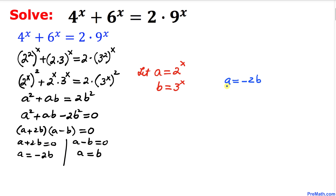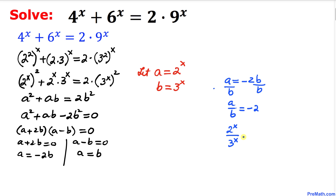For the first equation, dividing both sides by b gives a/b = -2. Since a = 2^x and b = 3^x, we get 2^x / 3^x = -2, or simply (2/3)^x = -2.